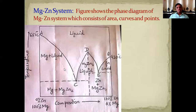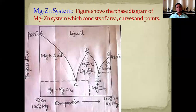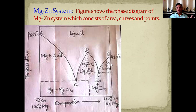As you can see on the screen, the magnesium-zinc phase diagram consists of some areas — one area, another area, another area, and another area. This phase diagram consists of different areas, different curves, and different eutectic points. As we have discussed the phase diagram of the water system and lead-silver system, in the same way we have to explain the phase diagram of this magnesium-zinc system.